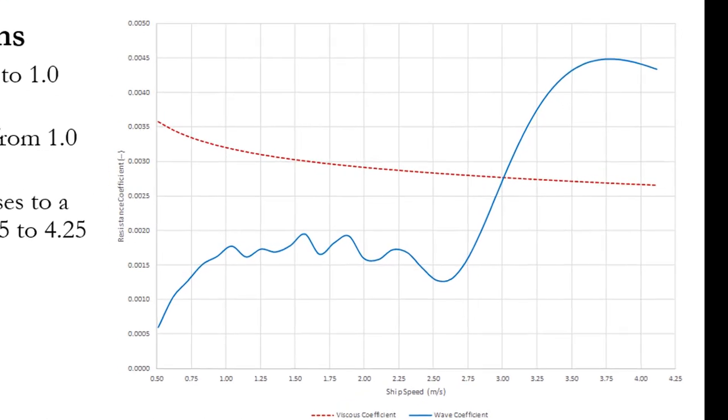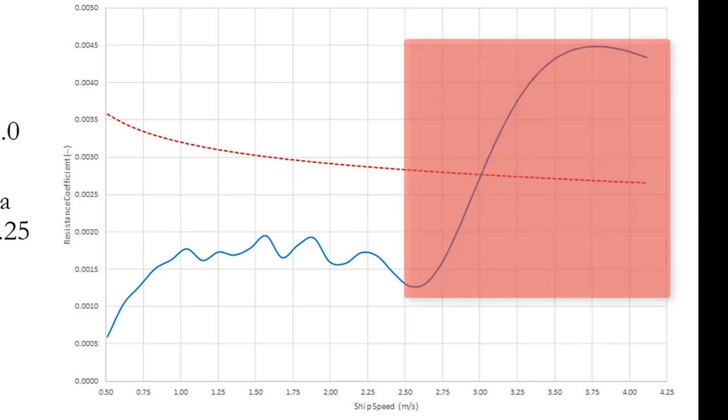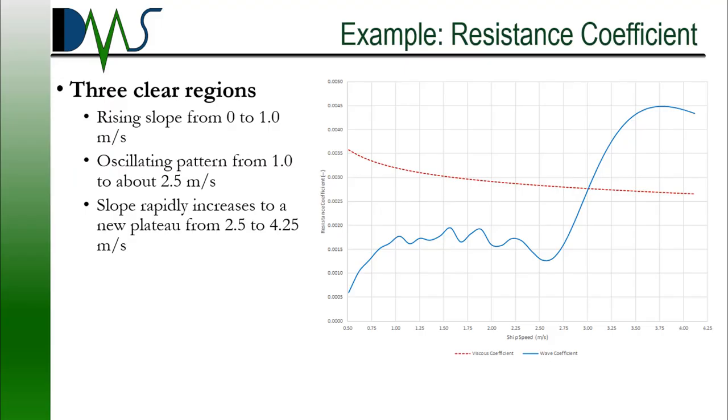Look at the blue line of the wave coefficient. It very clearly shows three distinct regions. First, we've got this rising slope from zero to one meter per second. And then we've got this region from one to two and a half meters per second where you've got this interesting oscillating pattern going on. And then we have a region where the slope rapidly increases to a new plateau, going from two and a half to four and a half meters per second. That's the power of resistance coefficients, easier pattern recognition and easier analysis for comparison between different designs.